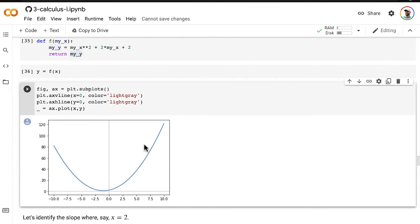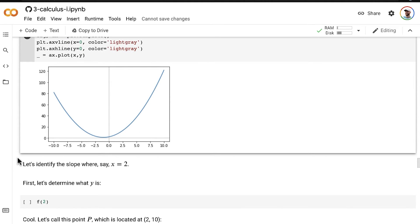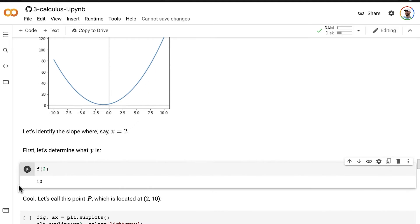Let's run that through our function f to give us a thousand y values that we can plot. We've already made plots like this before in the notebook, but now we're going to do something new. We're going to identify the slope definitively using the delta method at a particular point. Let's say we want to identify what the slope is where x is equal to 2. Our first step is to determine what y is equal to at that point. We can pass that x value of 2 into our function f, and that tells us that y is equal to 10. So let's call that point P, which is located at the point where x is equal to 2 and y is equal to 10.